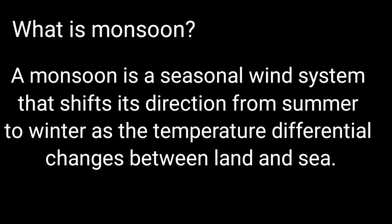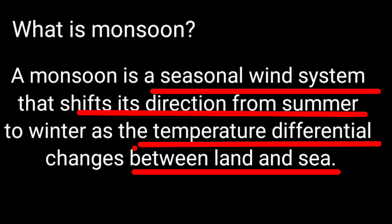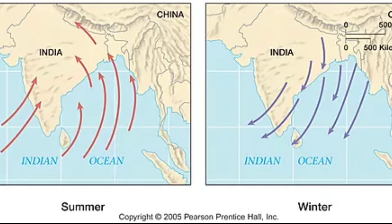First, what is monsoon? Monsoon is a seasonal change in the wind system — from land to sea — due to the difference in temperature. As you can see in the picture, winds blow from sea to land during summer and from land to sea during winters. Basically, this is a reversal of wind direction.